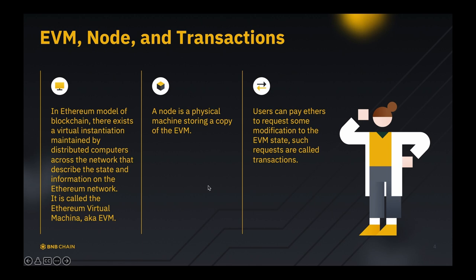In the Ethereum model of blockchain, there exists a virtual instantiation maintained by distributed computers across the network that describes the state information on the Ethereum network, called the Ethereum Virtual Machine, also known as EVM. You can imagine it as an abstract specification of all the state's data and information stored on the Ethereum network. A node is any physical machine storing a copy of the EVM, like your laptop or server. It is stored in a distributed system so that everybody maintains a copy and prevents malicious modifications to the state.